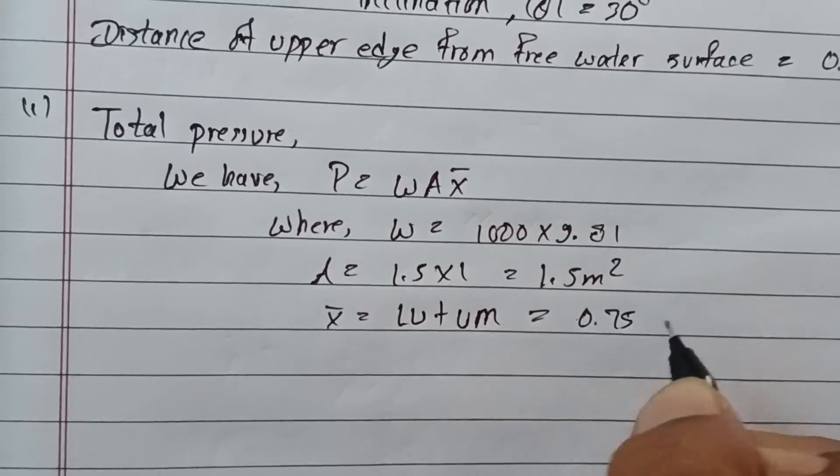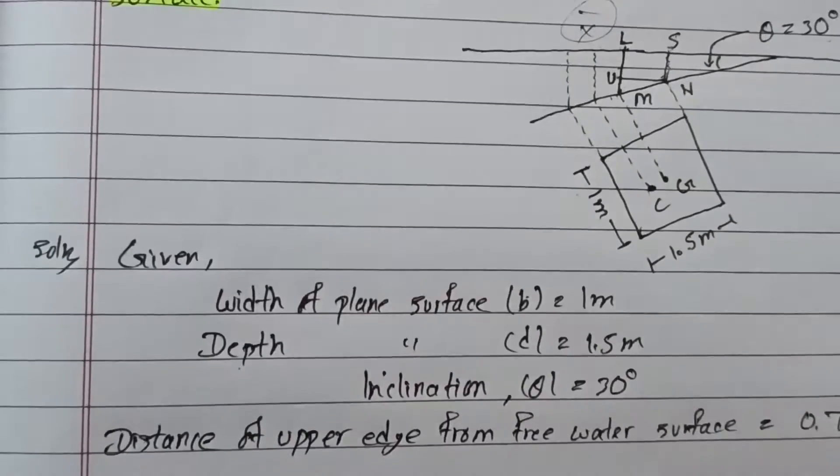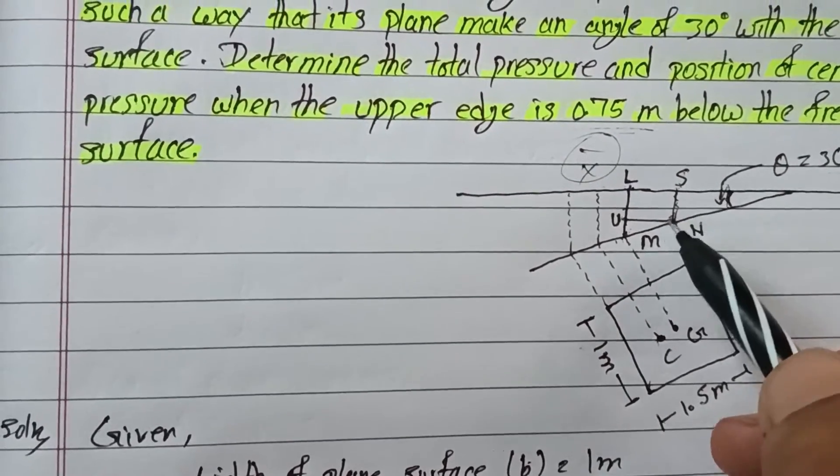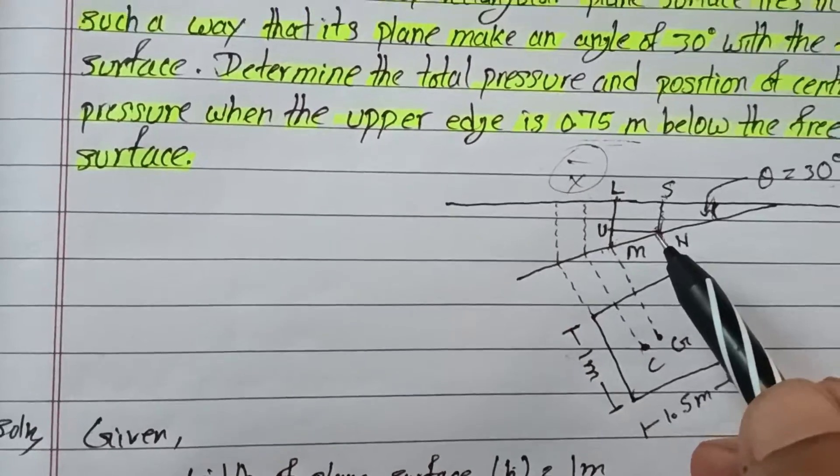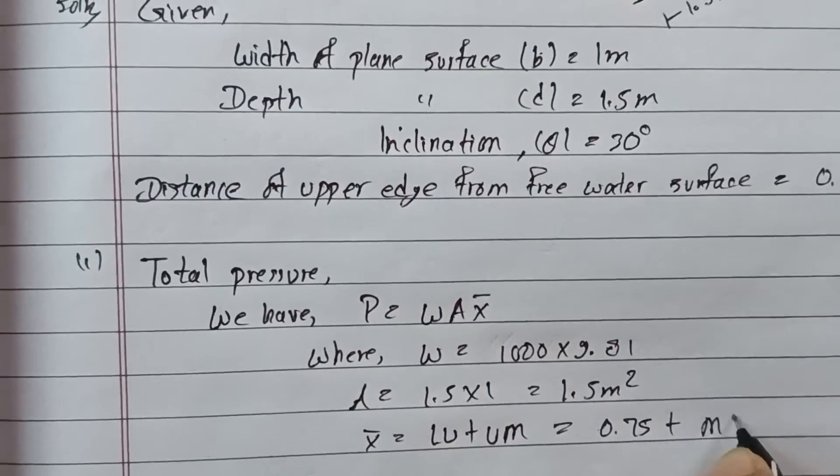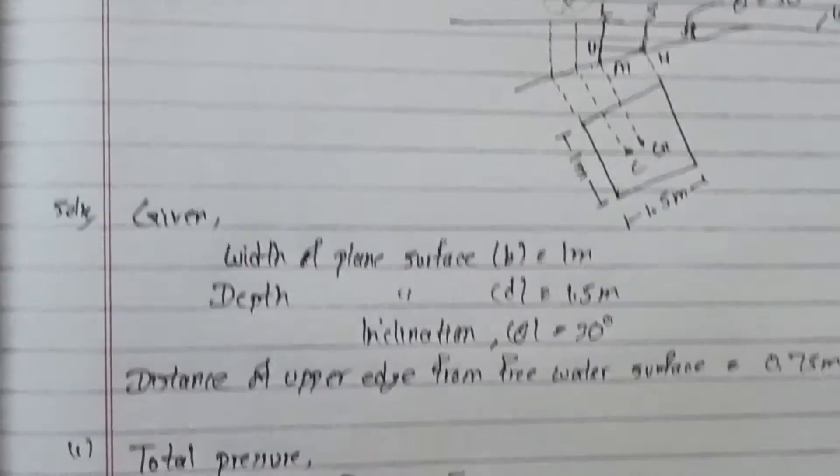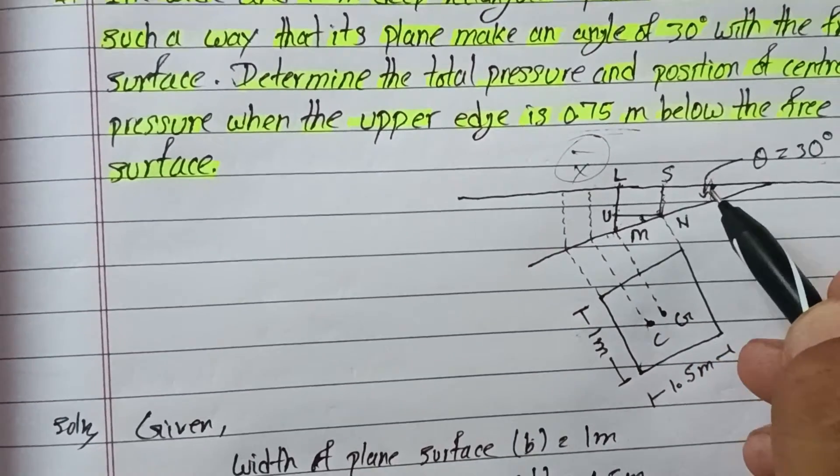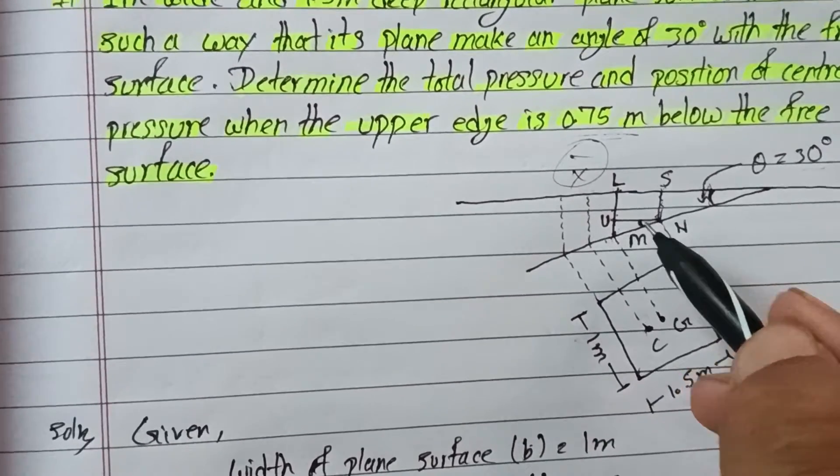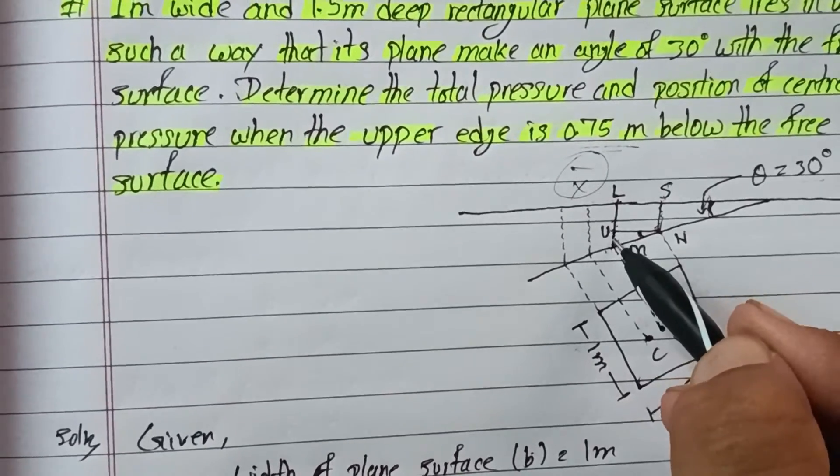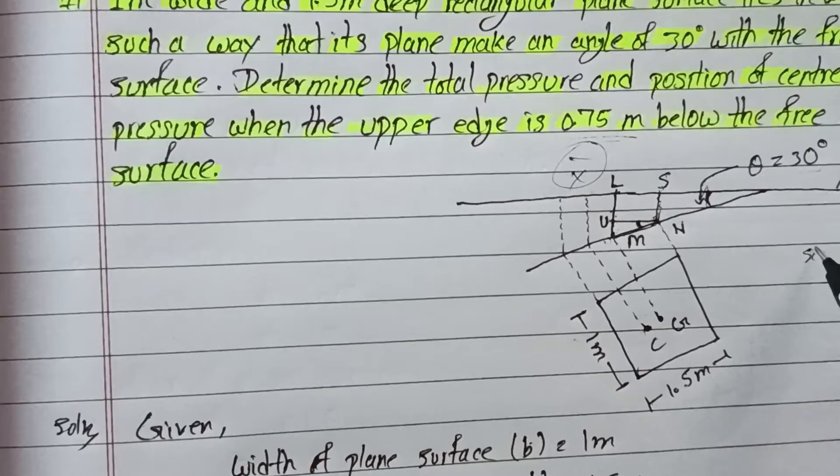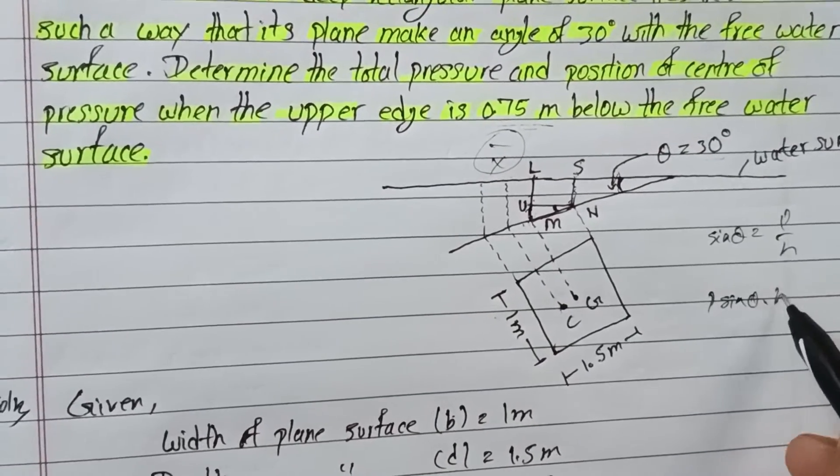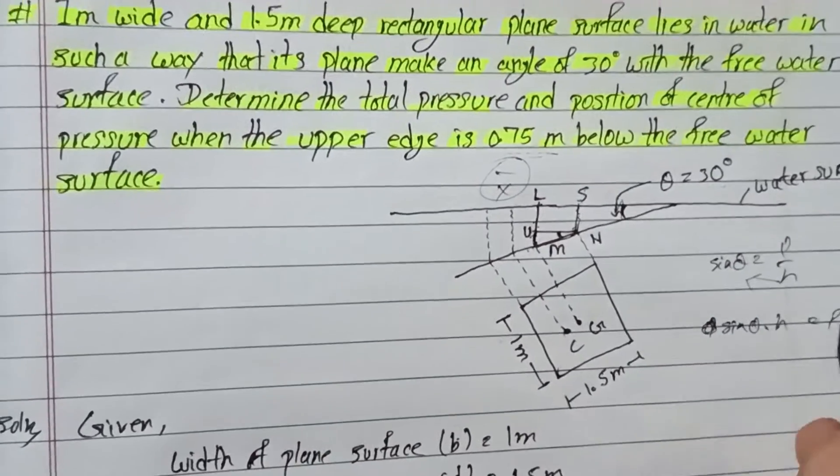We can write x-bar as l_u plus u_m. l_u is given as 0.75. Now for u_m, we need to consider that m_n sine theta component. From the geometry, u_m equals m_n sine 30 degrees. Since sine 30 equals 1/2, and m_n is the depth, P by H equals sine theta.